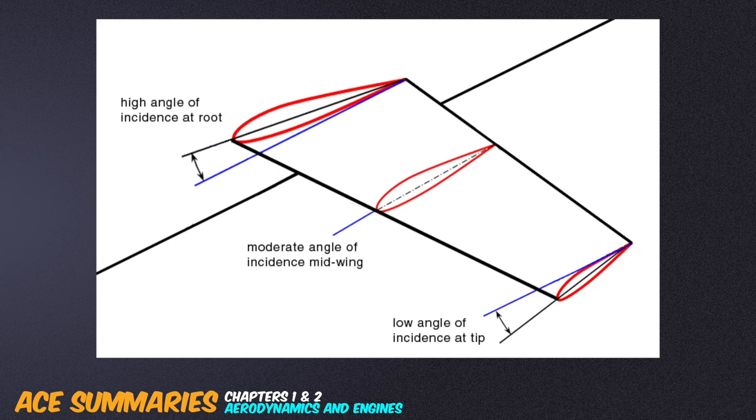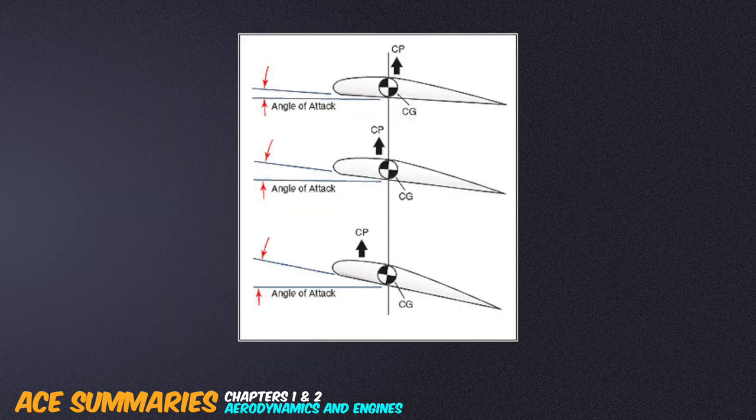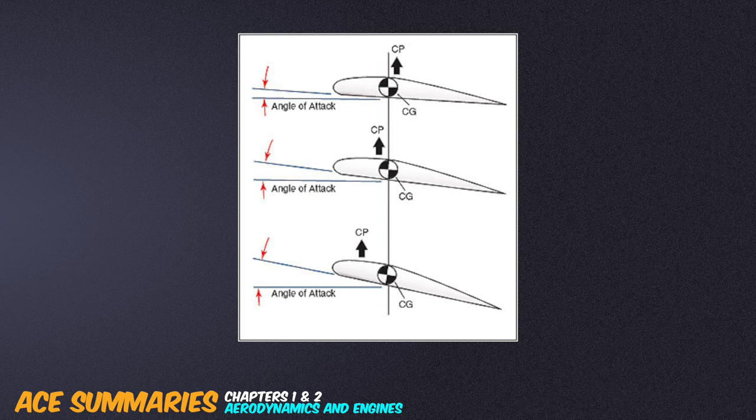Washout on a wing is a decrease of the angle of incidence from the root to the tip. It compensates for early wingtip stall due to higher loading in that region by maintaining the angle of attack lower at the wingtips. Center of pressure is a theoretical point through which the sum of the lifting force acts along the cord line of a wing. As angle of attack increases, the center of pressure moves towards the leading edge.